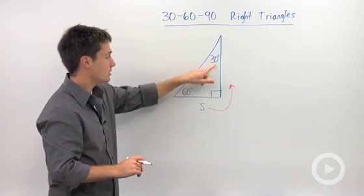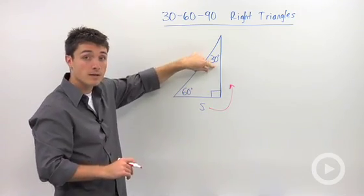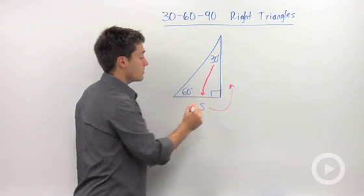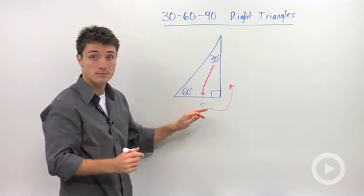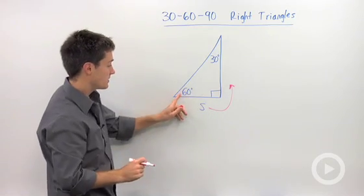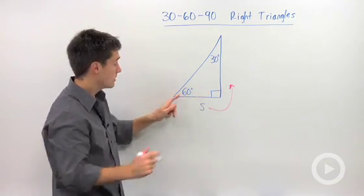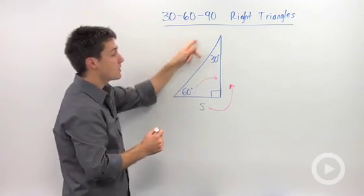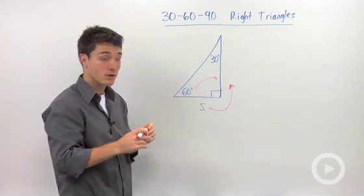Well, if I look at my angle measures, 30 degrees is my smallest measure, which means the side that is opposite of 30 will be my shortest leg. The next longest will be my next largest angle, and since 60 degrees is smaller than 90, 60 degrees is my next longest leg. And then of course our hypotenuse is always the longest side in our triangle.